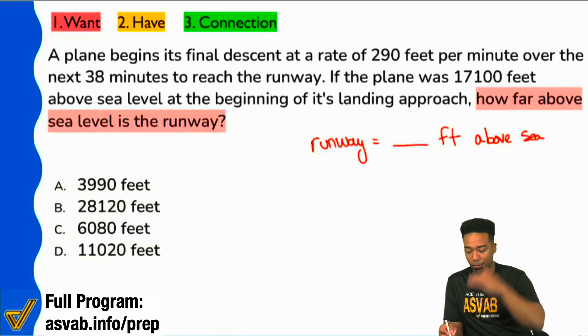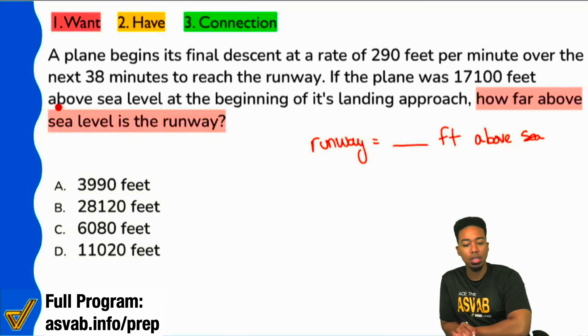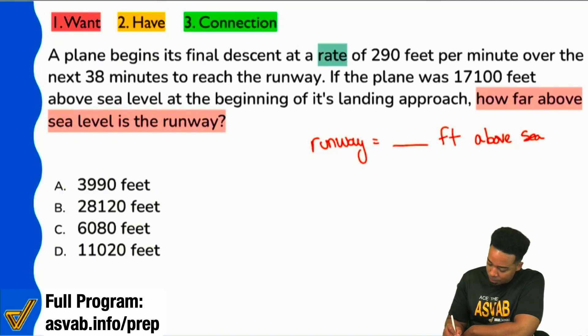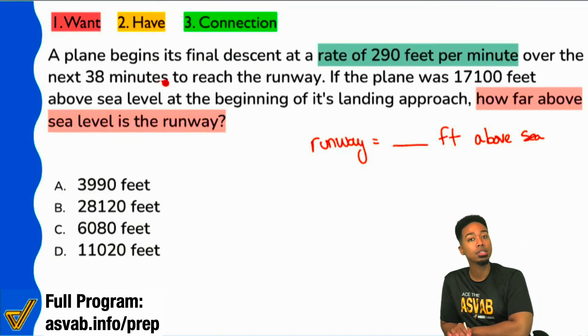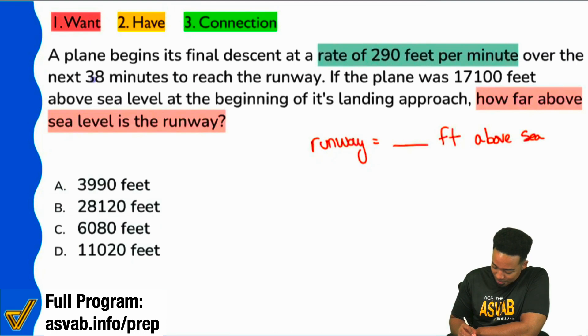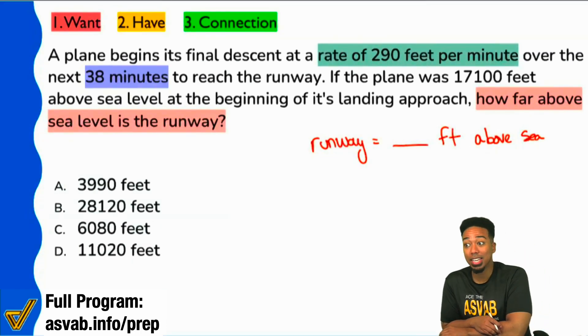We want to know where this runway is, how far up it is. Sounds good. Let's read. A plane begins its final descent at a rate, right there, already see the word rate, of 290 feet per minute over the next 38 minutes to reach the runway. My party people, that's clearly a rate. They say rate, but what is this immediately after? It says, this is the rate over this much what? Over this much time. Here's our rate over this much time. So boom, in this question, you see that you're immediately given a rate and a time, which is awesome because distance equals rate times time, you multiply rates times. We're good.